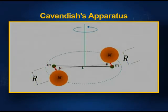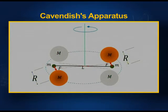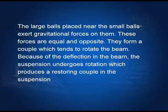Two large balls are mounted on a circular track. These large balls are placed on either side of the small masses and exert forces F on each other. These forces are equal and opposite and constitute a couple. The large masses are then rotated and brought near the small masses on the other side, so that the beam gets deflected on the other side. Several such observations are made and their mean is taken as the deflection of the beam. The large balls exert gravitational forces on the small balls, forming a couple which tends to rotate the beam, and the suspension undergoes rotation producing a restoring couple.